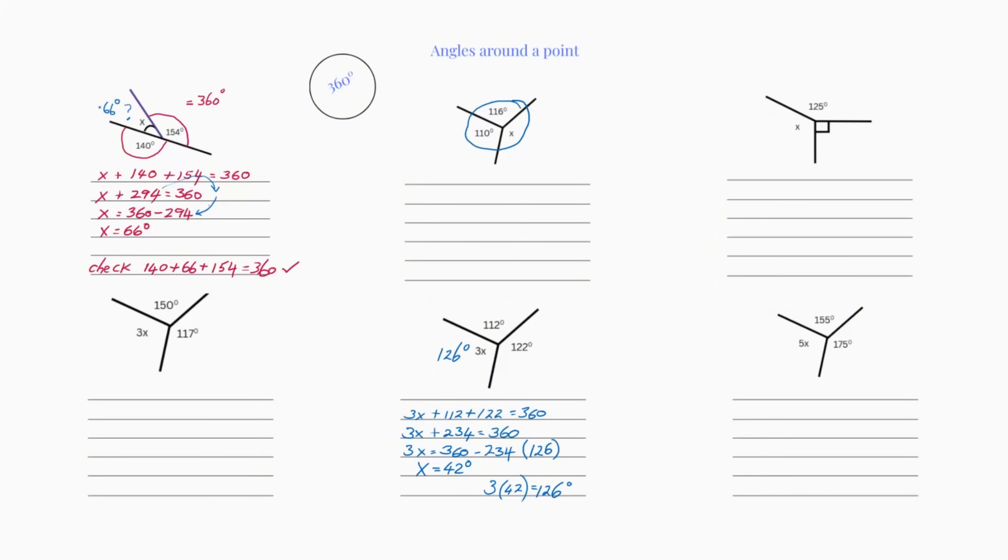You could be thinking, how can I be 100% sure that's right? But with these questions, you can always check your answer. Here I've checked it by adding up my 140, the 66 I've just worked out, and the 154. They all equal 360. If I got 350, there was something wrong because you've got to always equal 360.